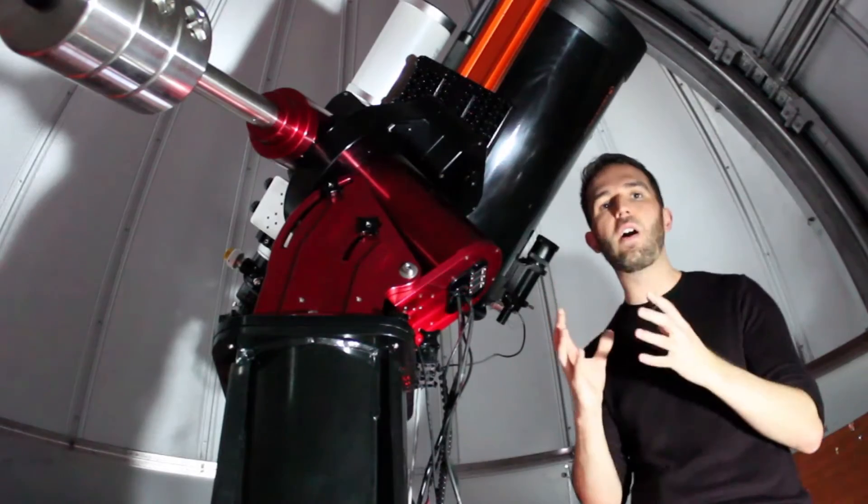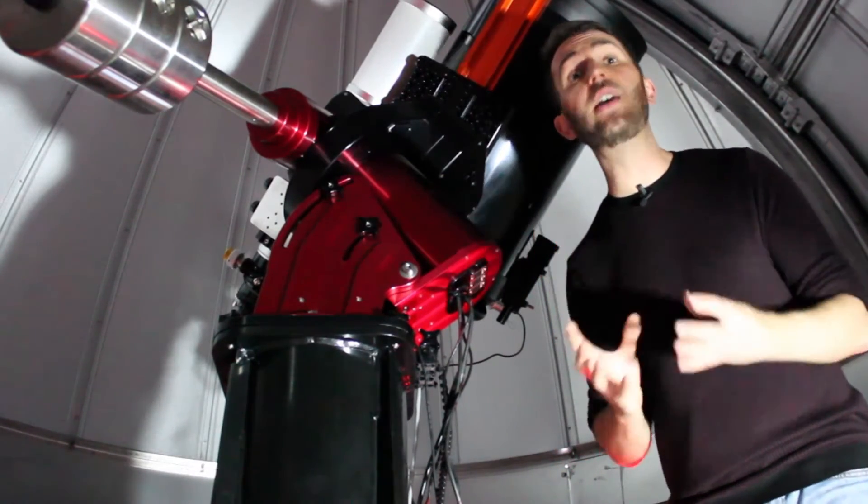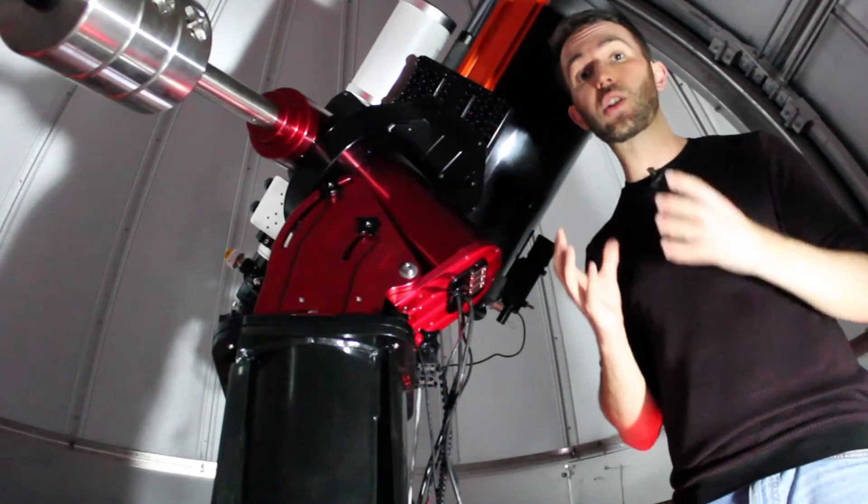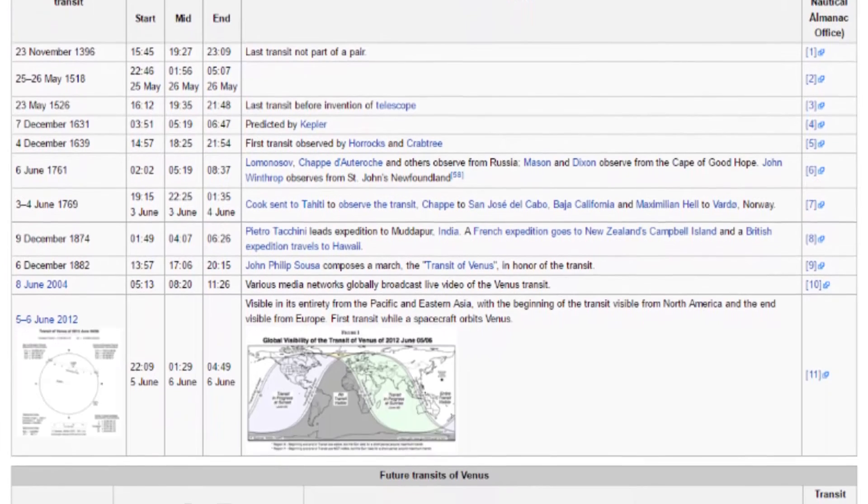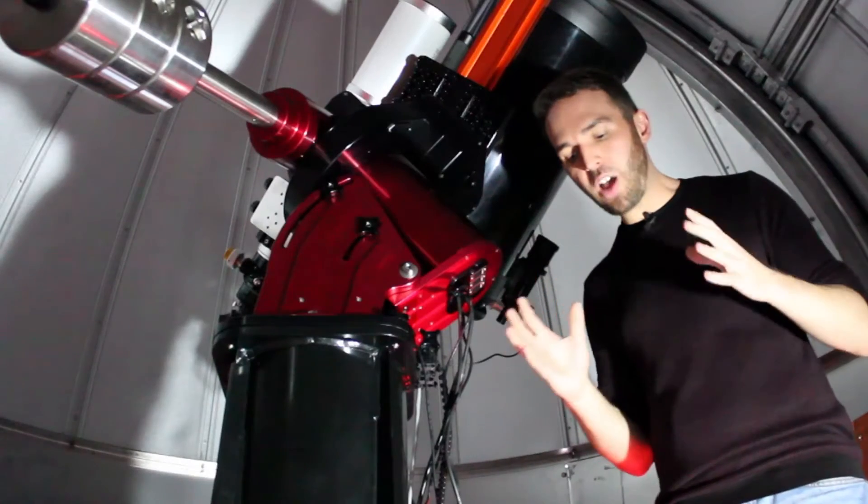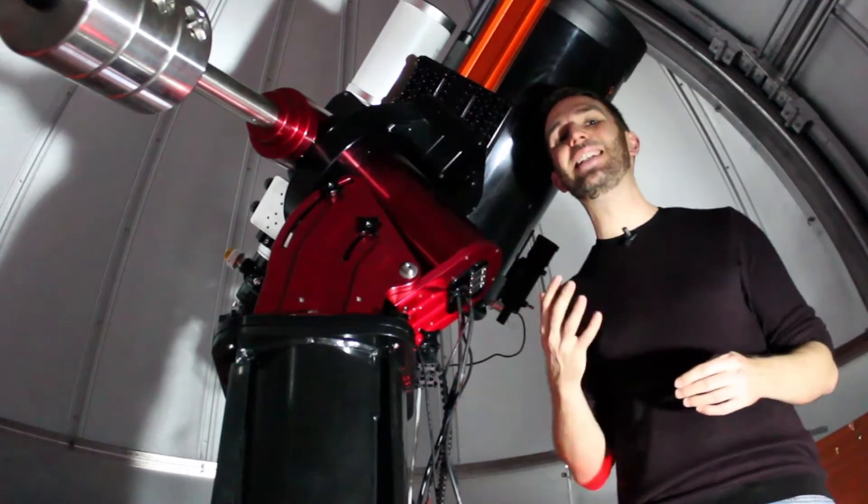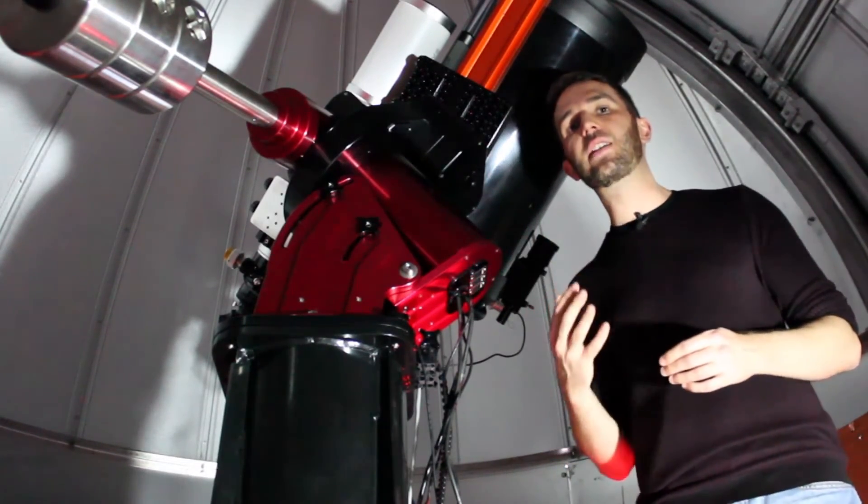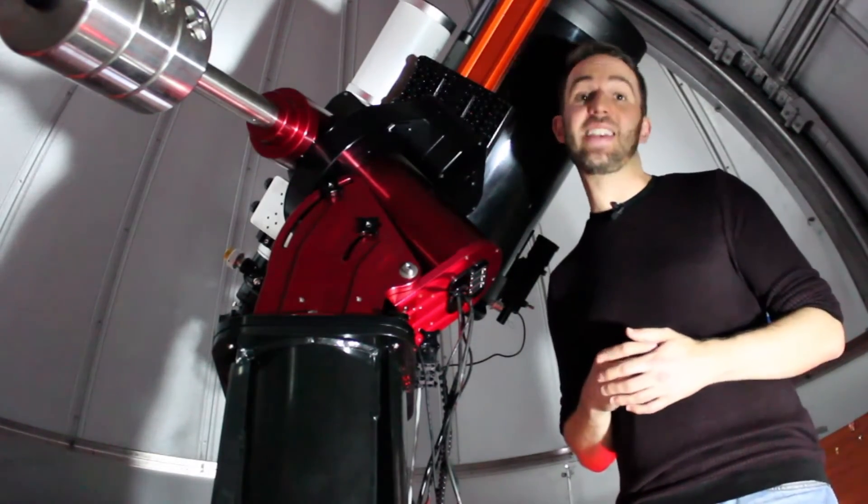Combining those two things we find that there is a 243 year cycle for planetary transits. You'll get a pair of them eight years separated and then very long gaps. In fact, the last one was in 2012 and it won't be until 2117 until the next time Venus will pass in front of the sun. I'm not sure I'm going to be around to witness that one.